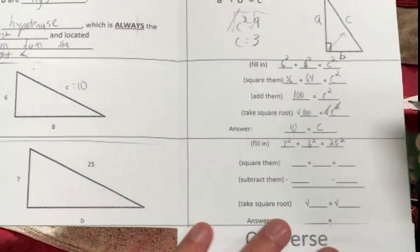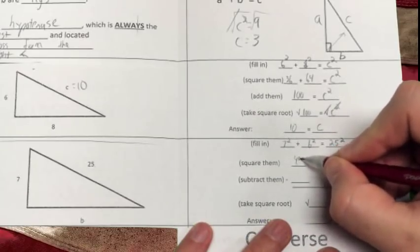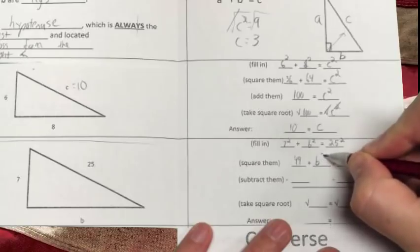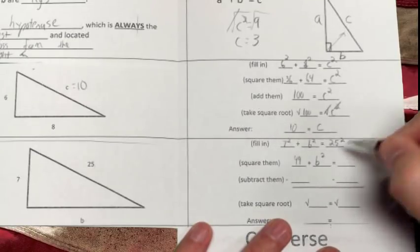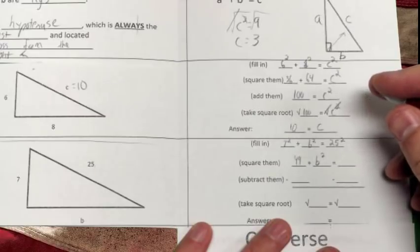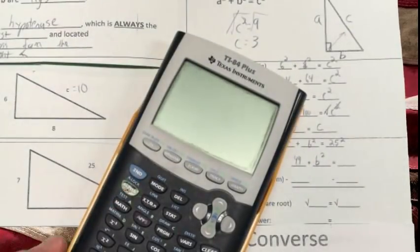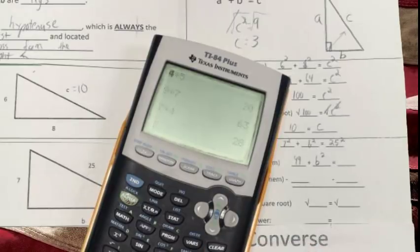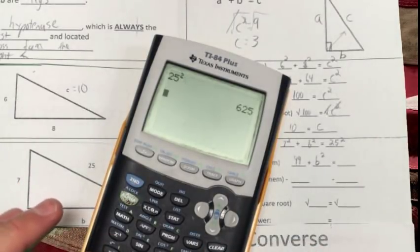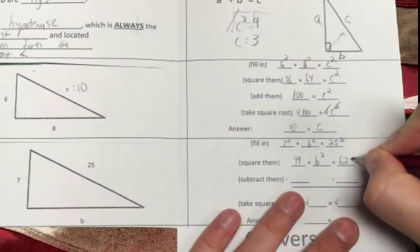7² is 49 plus B², and 25² is, if I'm remembering right... I want to say 625, but I feel like that's wrong. 25², 625. I was right, is 625.